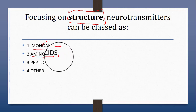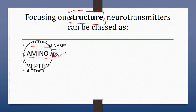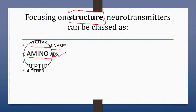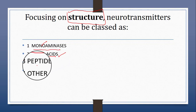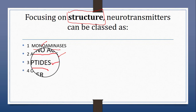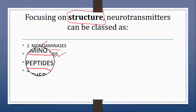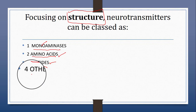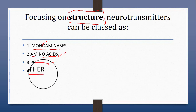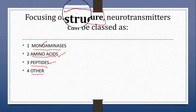Amino acid neurotransmitters include glutamate, GABA (gamma-aminobutyric acid), glycine, aspartate, and D-serine. Peptide neurotransmitters include opioids, endorphins, somatostatins, oxytocin, and vasopressin. Other neurotransmitters include acetylcholine, adenosine, and nitric oxide. This is the classification based on the structures of neurotransmitters.